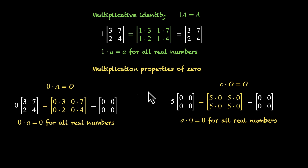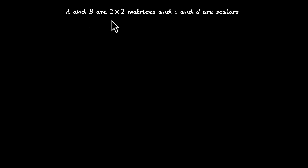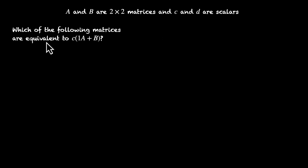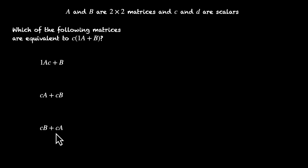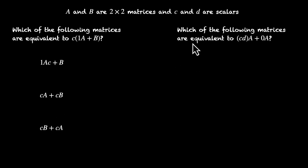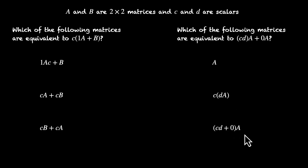Now let's solve a problem. A and B are 2 by 2 matrices and C and D are scalars. The question is: which of the following matrices are equivalent to C times (1A plus B)? The options are: 1AC plus B; CA plus CB; and CB plus CA. Here's another problem: which of the following matrices are equivalent to CD times A plus 0 times A? The options are: A; C times DA; and (CD plus 0) times A.